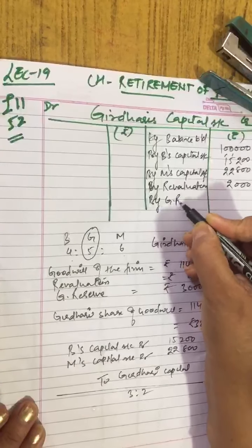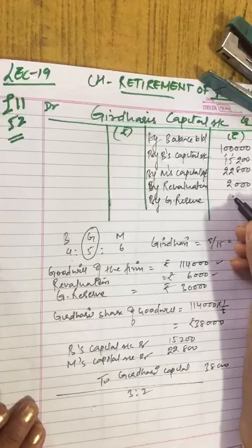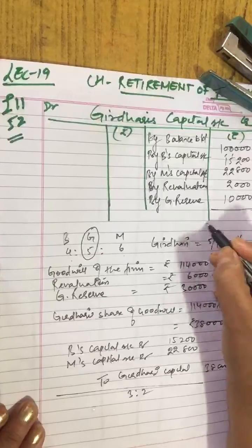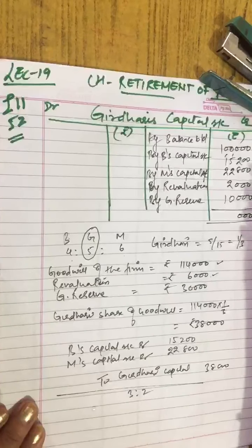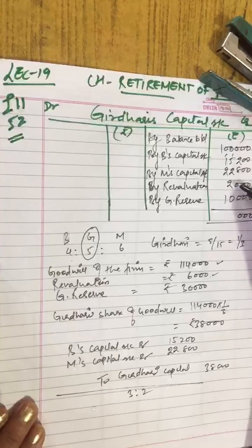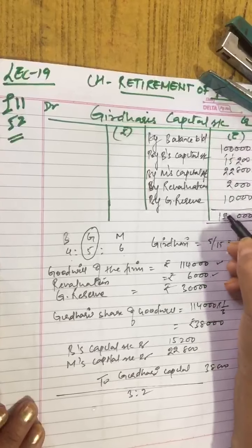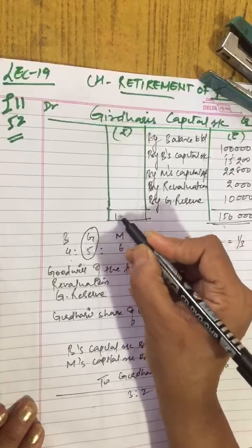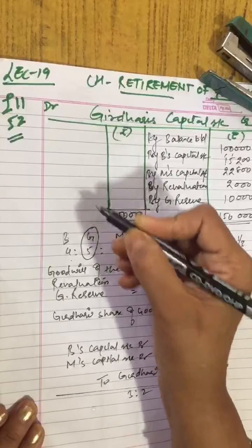Then you give his share from general reserve 30,000 which is 1 by 3, which is 10,000. If you have totaled this, this is 38, 39, 40, 50. Total balance is 1,50,000.